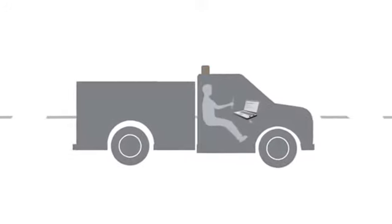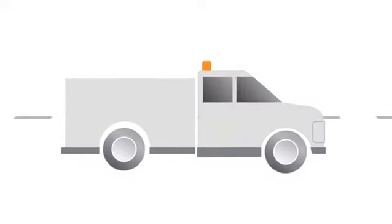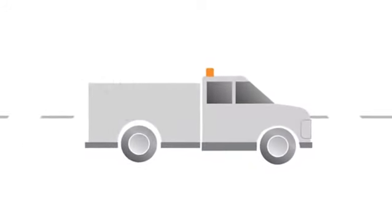In utility fleets, workers use laptops and tablets to access information on infrastructure, customers, and inventory. And expensive equipment can be tracked using asset tags.